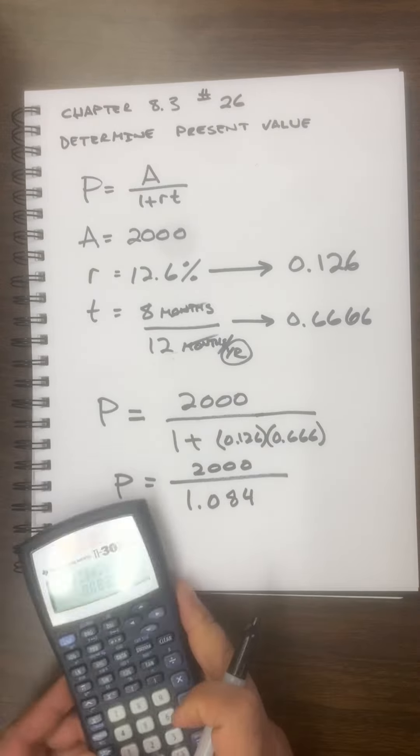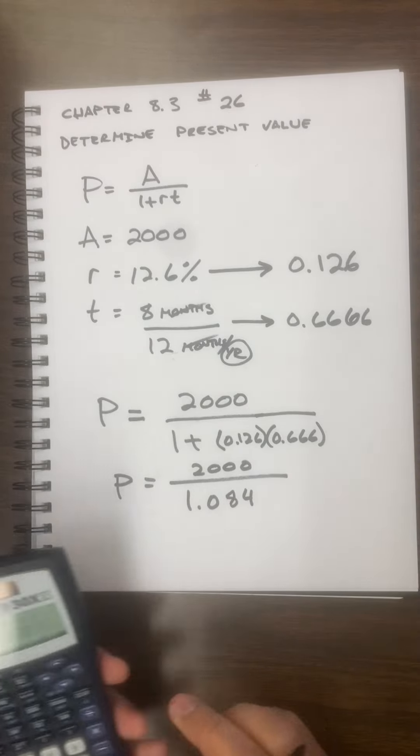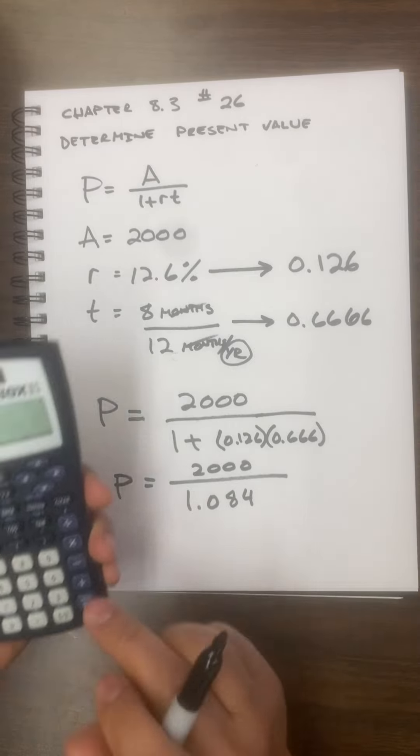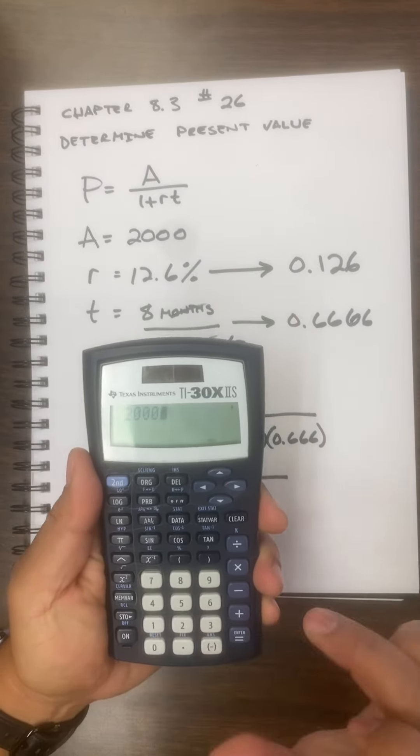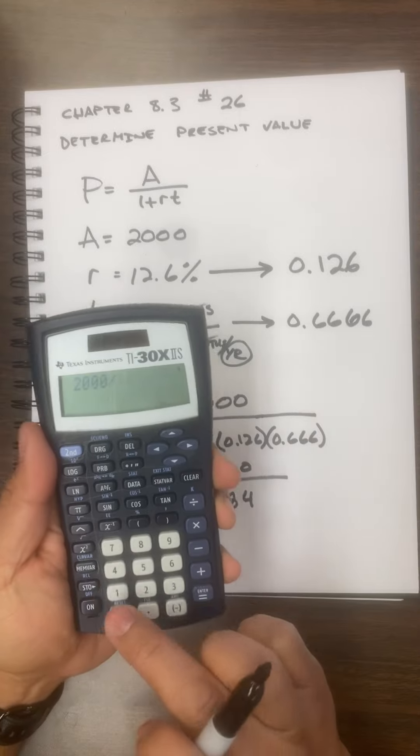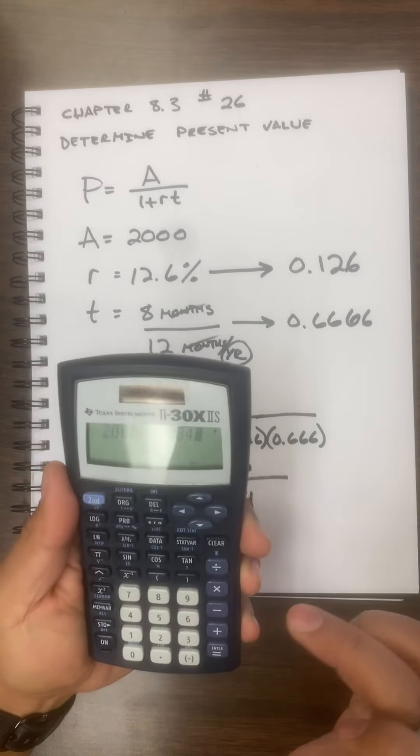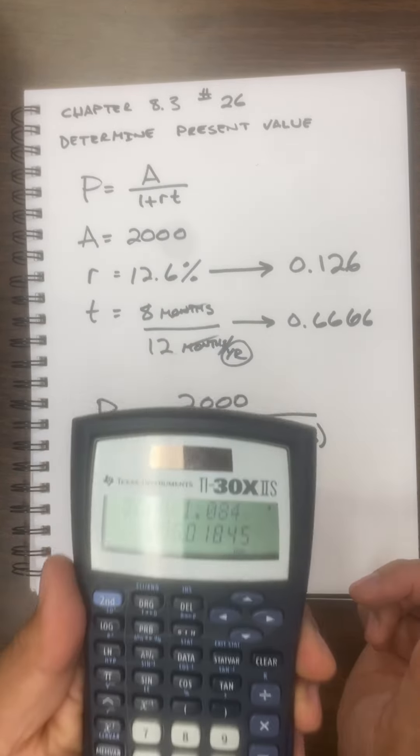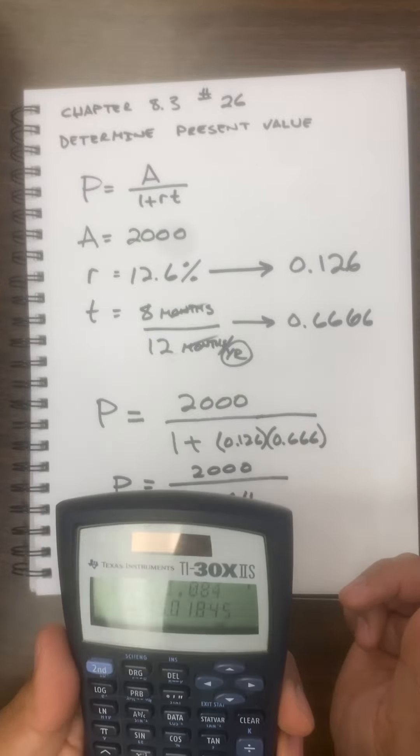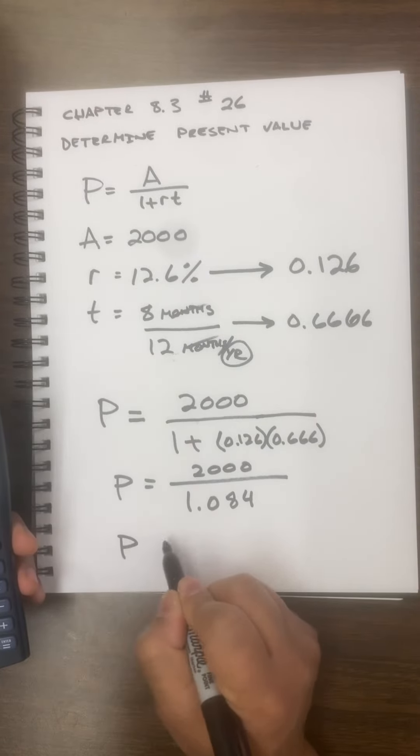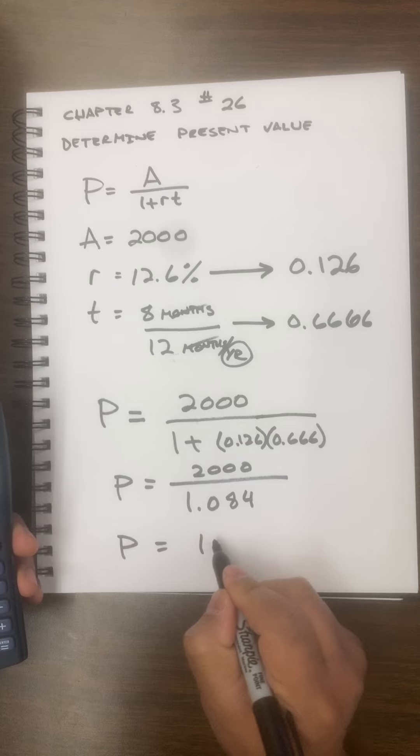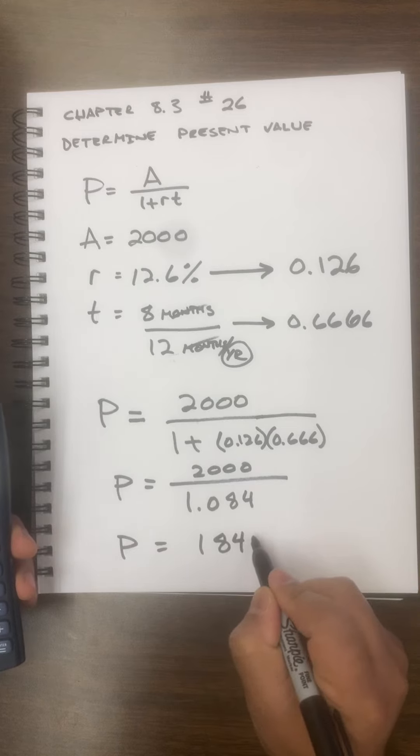I'm going to round it and finish the calculation: 2000 divided by 1.084, and I get a value of 1845.